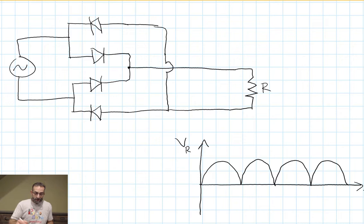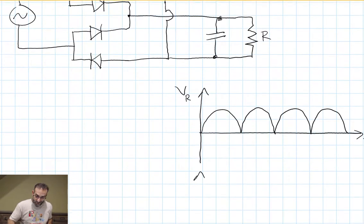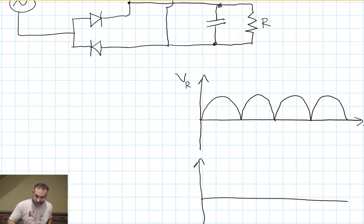Now if we add our capacitor across the resistor here, then that turns this signal into this one. And that ripple is very small. This is almost DC.